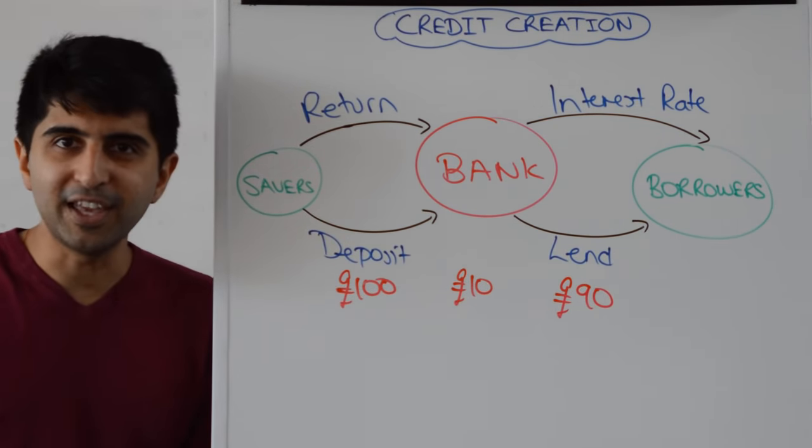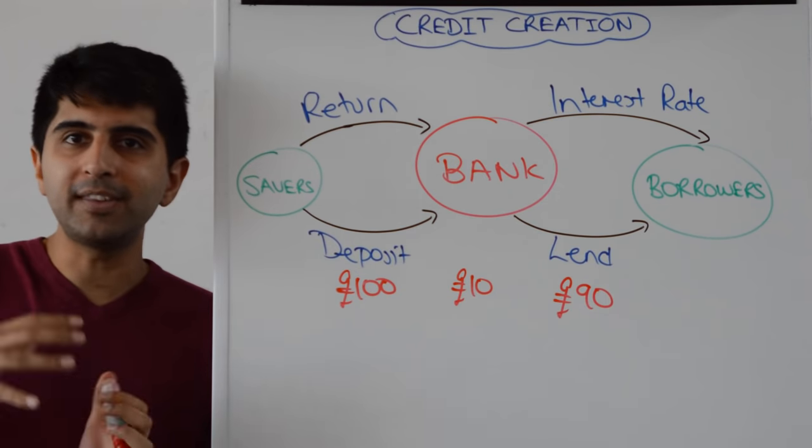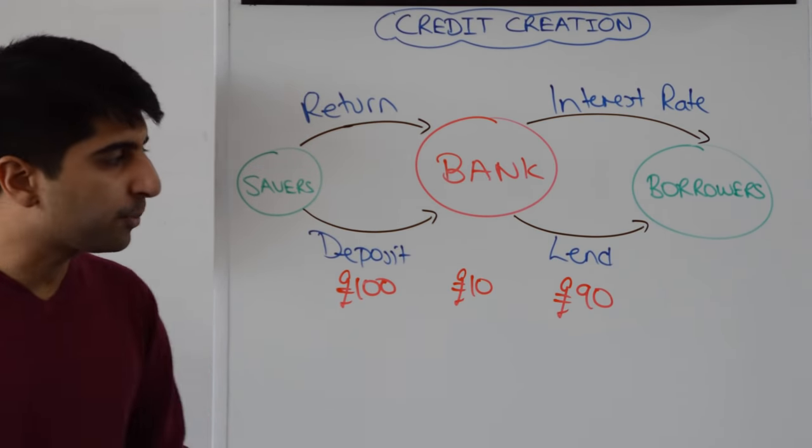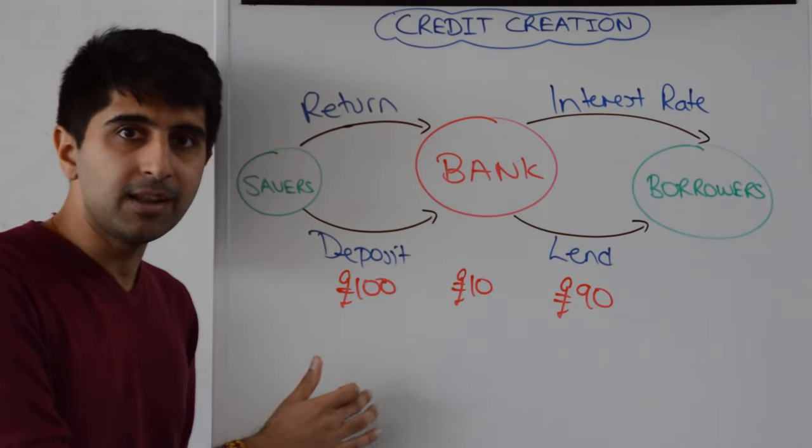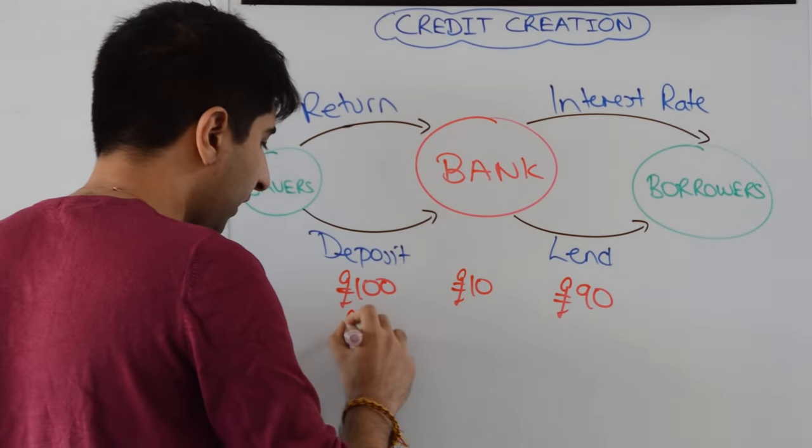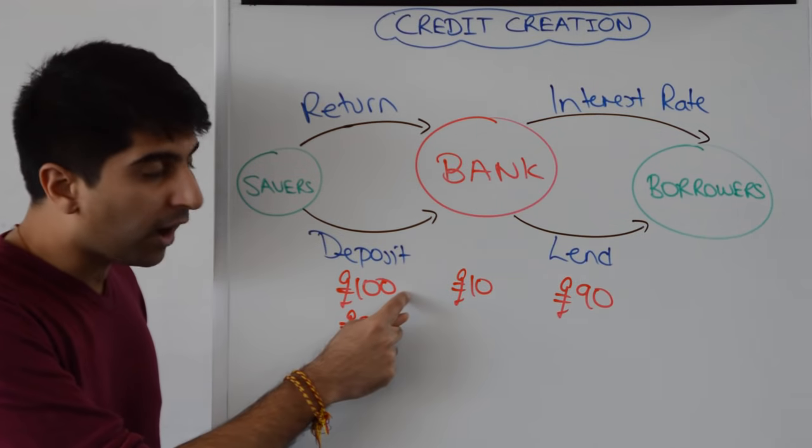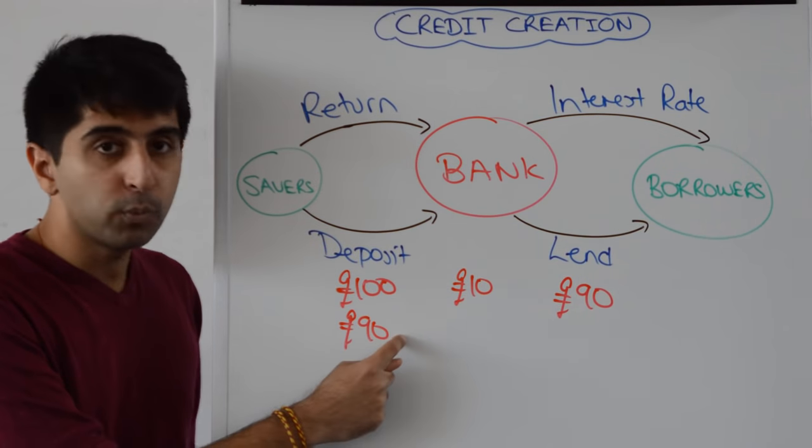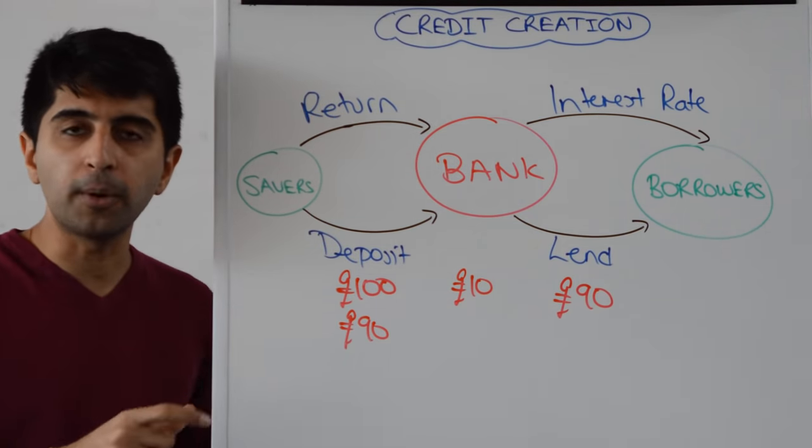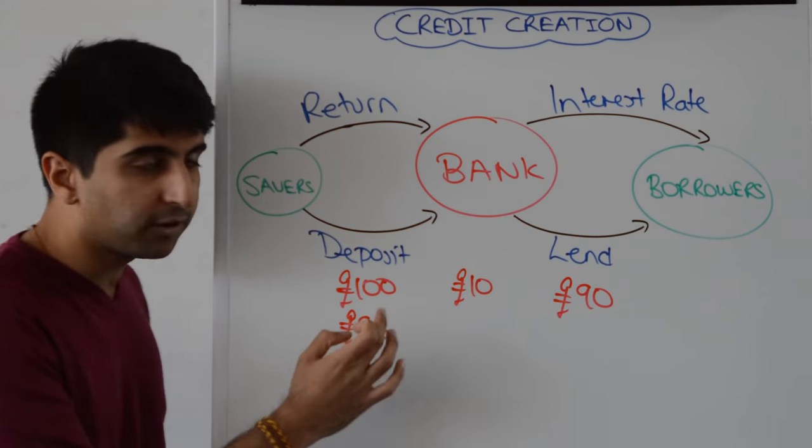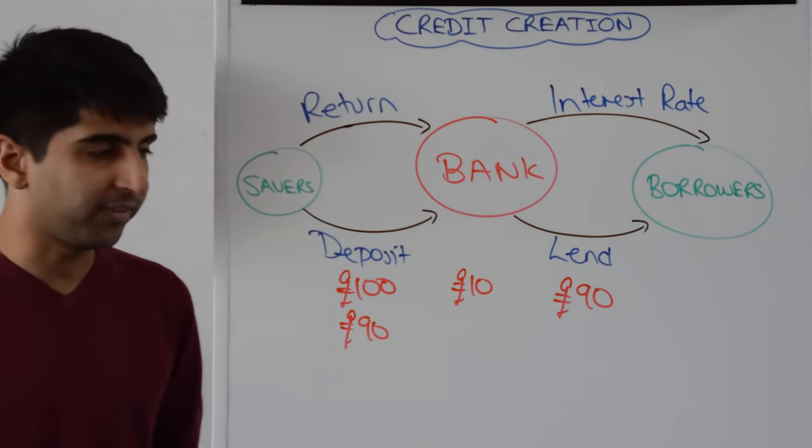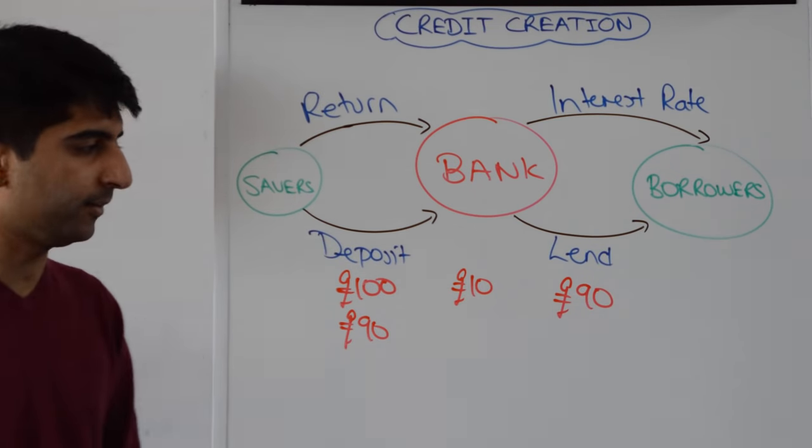Borrowers want money to spend in the economy. When they spend that generates income for somebody else at which point that ninety pounds can end up back in the bank as a deposit again. All of a sudden we are increasing the money supply. Where only a hundred pounds existed before we've now got ninety pounds on top. So a hundred and ninety pounds in the money supply compared to just a hundred pounds before. Remembering that deposits form a key part of the money supply.